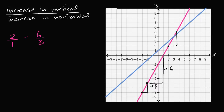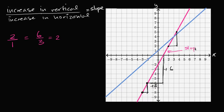This is called the slope of a line. You're probably familiar with the word slope from a ski slope — a ski slope has a certain inclination, it can be steep or shallow. Slope is a measure of how steep something is. The convention is we measure the increase in vertical for a given increase in horizontal. So two over one equals six over three equals two. This is the slope of the magenta line — the slope is equal to two. For whatever amount you increase in the horizontal direction, you're going to increase twice as much in the vertical direction.